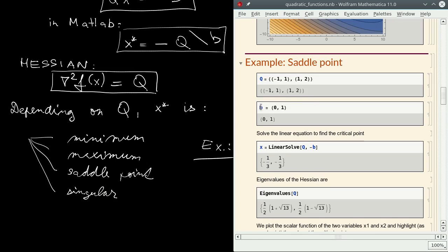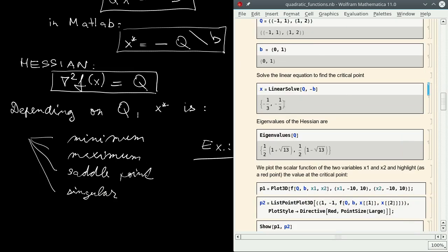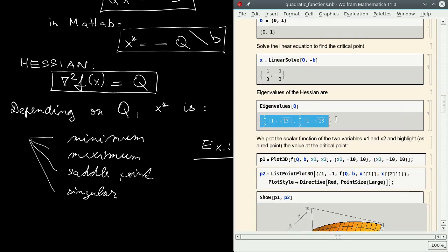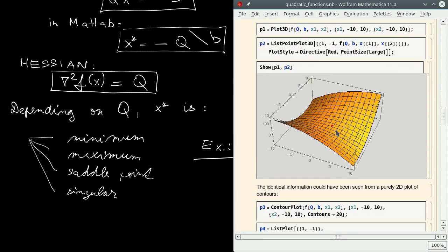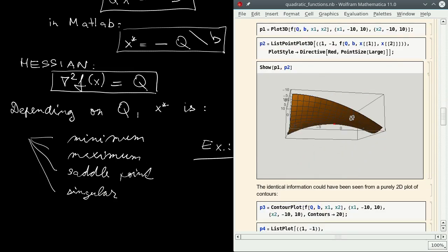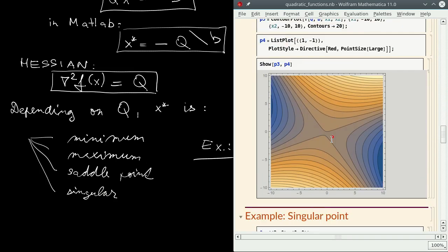For the second example, the eigenvalues of the Hessian at the critical point are: one negative, one positive, so what we obtained is a saddle point. Again, look at the contour plot.